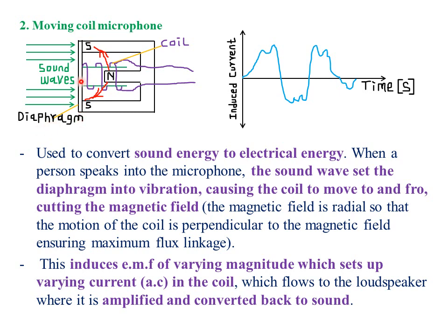One is that it has the diaphragm. The diaphragm is usually flexible, therefore it can move to and fro whenever some sound waves are incident on it. The moving coil microphone also has a magnet with radial magnetic fields — we have a north pole here and a south pole here. These radial magnetic field lines are placed in such a way that as the coil vibrates, it cuts the magnetic field lines at an angle of 90 degrees, such that the maximum EMF or maximum magnetic flux will be induced in the coil.